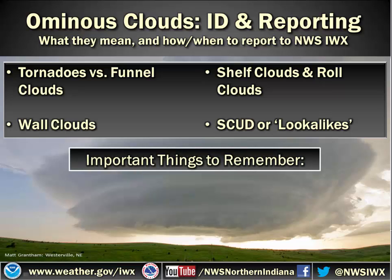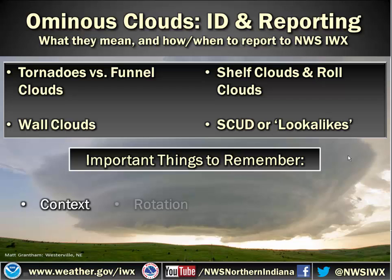Three important things to remember when looking at different types of clouds and trying to identify what's happening in a storm: First, context. What are you exactly looking at? Where are you with respect to the storm? What should you be seeing with this type of storm? Apply the knowledge from the other portions of this spotter talk, perhaps collocating with your radar on your phone. The second thing is rotation — is the feature rotating? This can help you discern things and is a very big differentiator between scud and tornado, funnel clouds, and wall clouds.